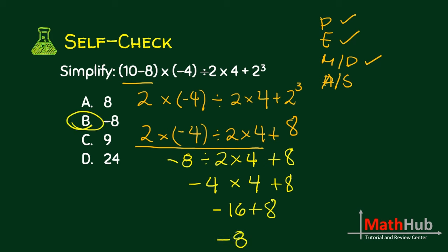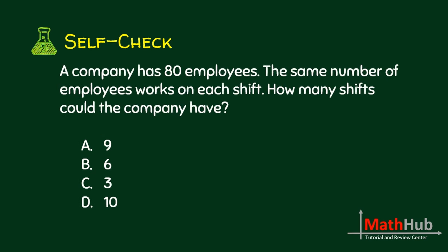Letter B. A company has 80 employees. The same number of employees work on each shift. How many shifts could the company have? This is just a question of finding which among the choices divides 80. The answer is letter D, because 10 divides 80.